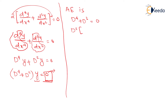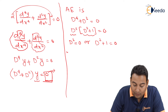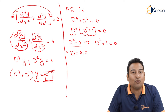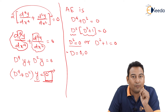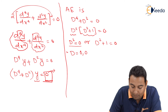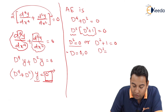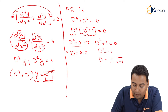We can take D² common: D²(D² + 1) = 0. Either D² = 0 or D² + 1 = 0. D² = 0 means D = 0, 0 (two repeated roots). D² + 1 = 0 means D² = −1, so D = ±√(−1) = ±i.